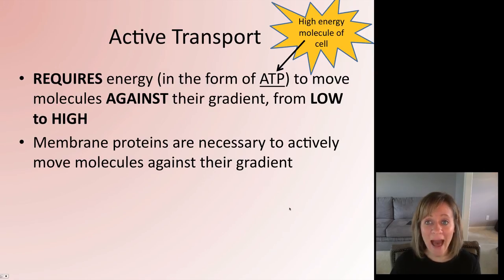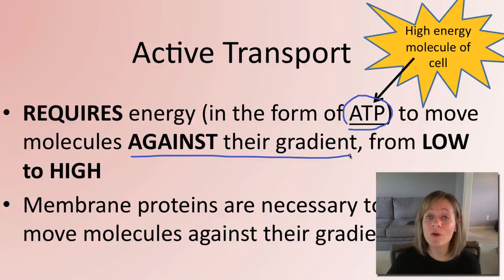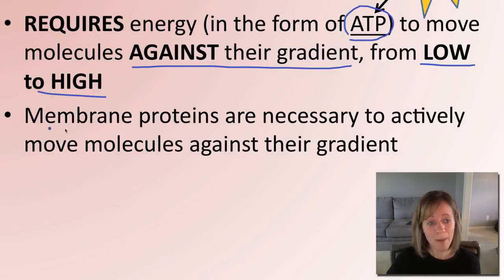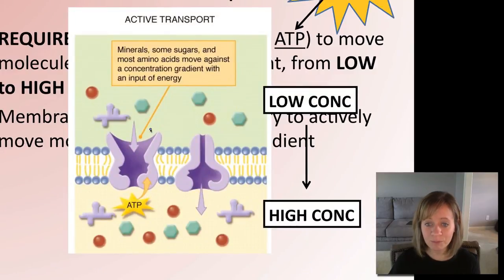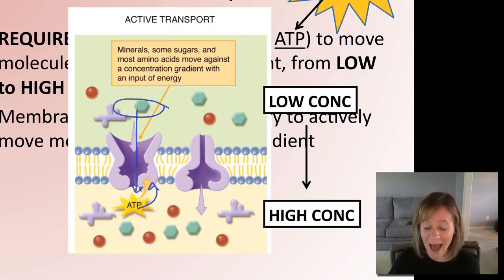The last type is active transport. This type of transport does require energy in the form of ATP, the energy molecule of the cell. It requires energy because it's moving molecules against their gradient — instead of going high to low, we're going from low to high. Just like with facilitated diffusion, membrane proteins are necessary for this active movement against a gradient. ATP provides that little energy boost to open the channel and have molecules get inside the cell. That's active transport.